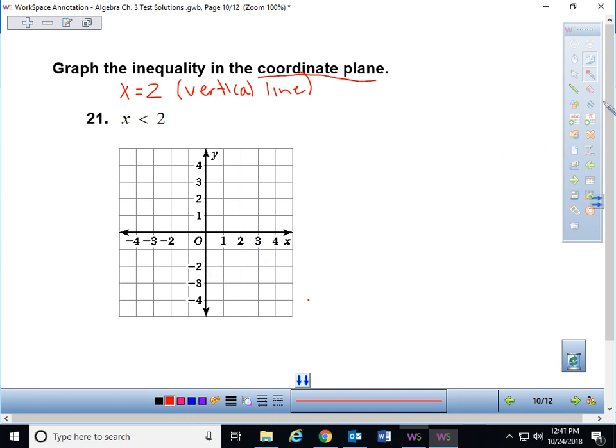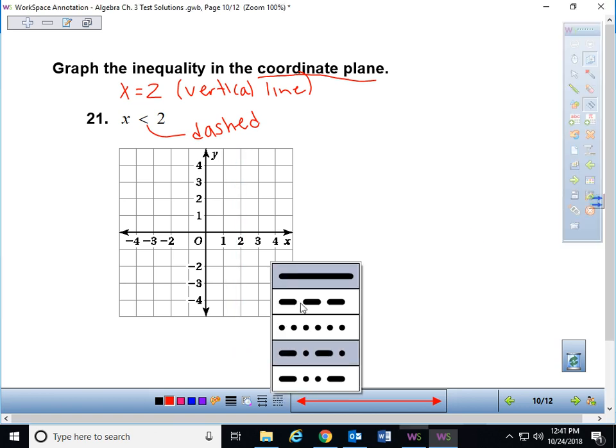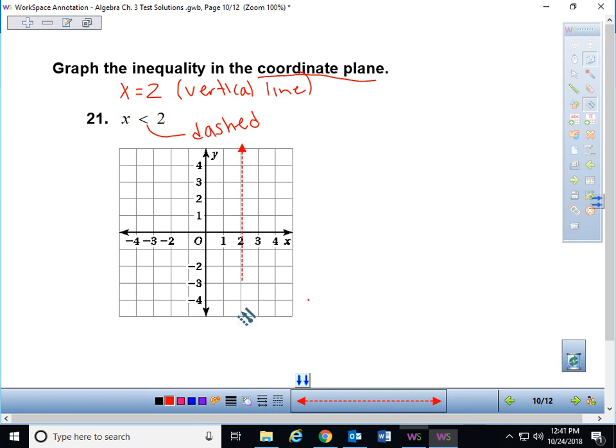But I need to figure out what kind of line. Is it a dotted line or is it a solid line? Well, the inequality symbol in the original problem is a strict inequality, just less than. That right there tells you this should be dashed. So let me go here, my line tool. I'm going to draw a dashed line through x equals 2. Oh, that's not dashed. Let me go back. Fix that. There is my dashed line. That looks better.